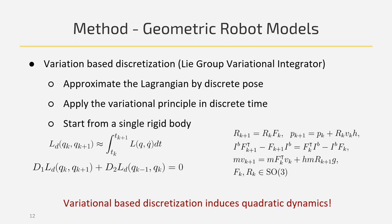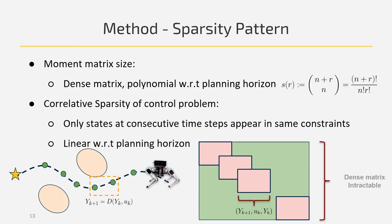For a single rigid body, we find that the dynamics is exactly quadratic. Furthermore, only states at consecutive time steps appear in the same moment matrix with the same constraints. Therefore, we do not need a full dense matrix, but rather a number of smaller ones that scales linearly with respect to the planning horizon.